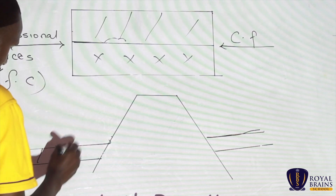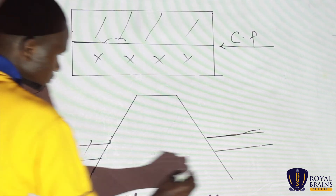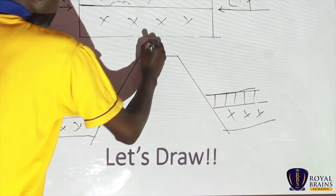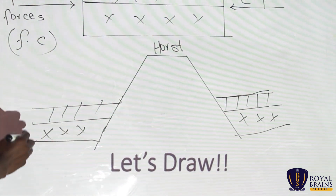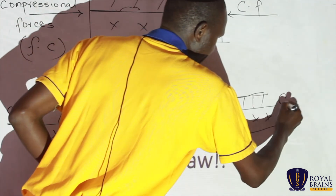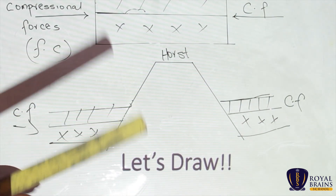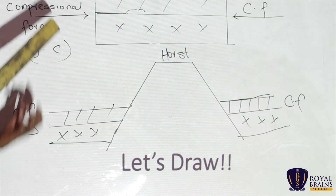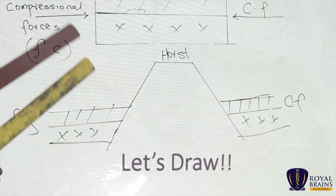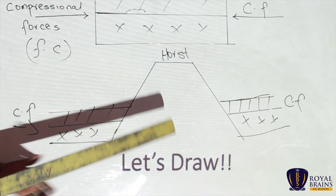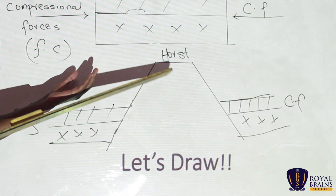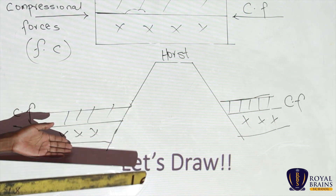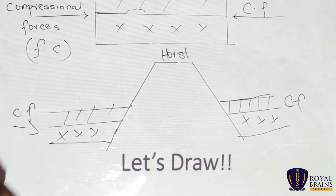Now, maybe this is the normal layer here. This is what we are now calling the horst, or block mountain. Remember, here we had compressional forces on both sides. What I am demonstrating in short: we had the normal land, and it was subjected to compressional forces. These forces pulled toward one another, and the middle part was forced to move up. Once it was forced to move up, it led to the formation of the block mountain. Block mountains, or horsts, are flat at the top. The normal land on the sides was actually forced to sink, leading to the formation of the block mountain.